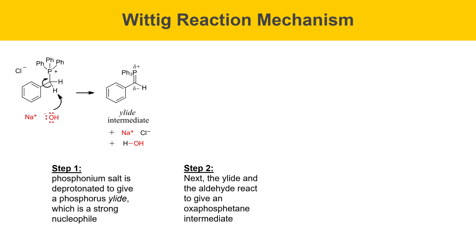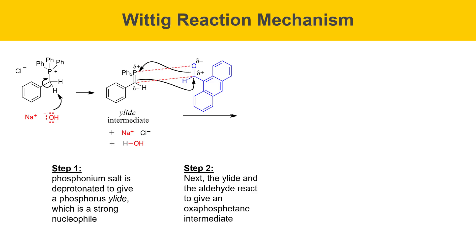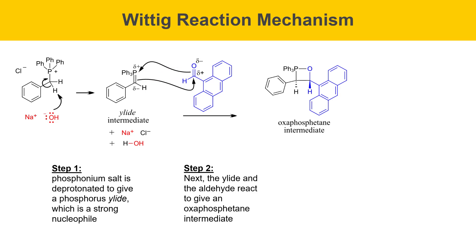In the second step, the ylid and an aldehyde react to give something called an oxaphosphetane intermediate. In our experiment this week, our aldehyde is 9-anthraldehyde, as shown here. The polarization of aldehydes is that the oxygen has a partial minus charge and the carbon has a partial positive charge due to electronegativity differences. These molecules line up such that their partial charges complement each other, and the partially negative carbon of the ylid attacks the carbonyl carbon of the aldehyde to give a new carbon-carbon bond, while the electrons in the oxygen-carbon double bond flow to give a new bond between oxygen and phosphorus. The result is an oxaphosphetane intermediate consisting of a four-membered ring with a new phosphorus-oxygen bond and a new carbon-carbon bond.